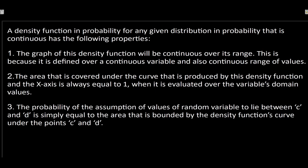Finally, part three — which is linked to part two — the probability of a random variable taking values between c and d is equal to the area under the curve between c and d. If we place two values on our density function and calculate the area between them, that gives us the probability of that occurring. These are the formal properties; we'll take a look at an actual example which will help clarify them.